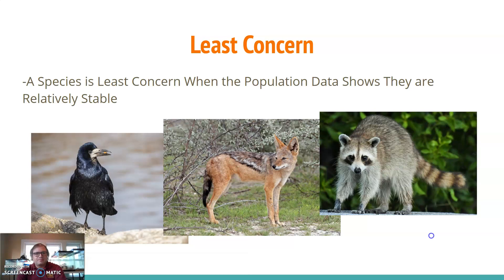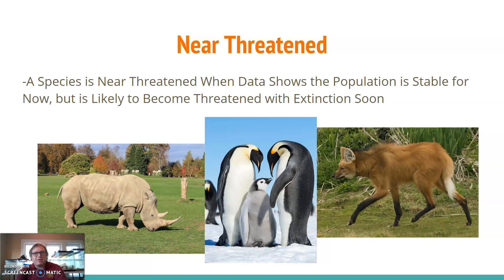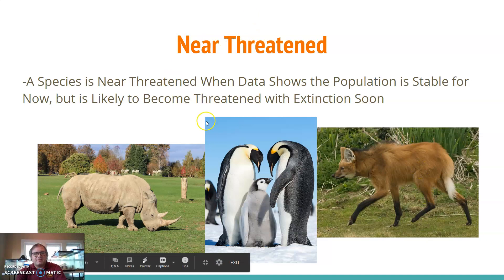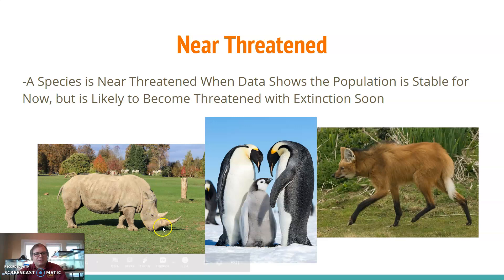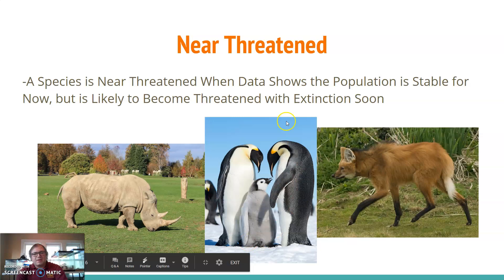Near threatened means a species' population is stable for now but is likely to become threatened with extinction soon. White rhinos aren't quite there yet, but they could become threatened because of poaching for their horns. Emperor penguins look relatively good right now, but global warming could impact the Antarctic ice they depend on. Maned wolves are doing okay, but ongoing deforestation in their habitat could put them at risk in the future.